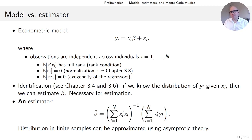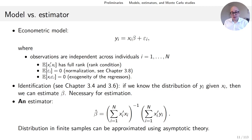To explain what I mean: if the expectation of epsilon i were two instead of zero, I could still generate the exact same distribution of y for given x. I would just decrease the first element of beta by two at the same time, and these would cancel out.